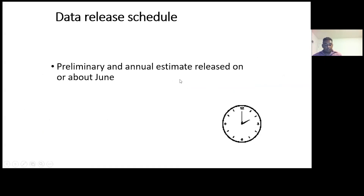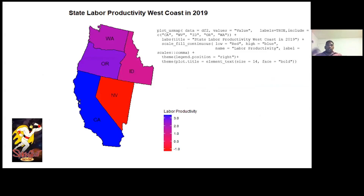Feel free anytime to ask questions. Our data is typically released in June of every year and is located on our website — I've posted the link in the chat. You can use our data to create some really cool maps. Here I'm using R and the US map package. I'm using the plot_usmap function to display our data, and using this function we can actually create regions — here I'm showing the West Coast states and their different productivity values. This is a choropleth map showing the percentage change over time, specifically the 2018–2019 growth rate of labor productivity.